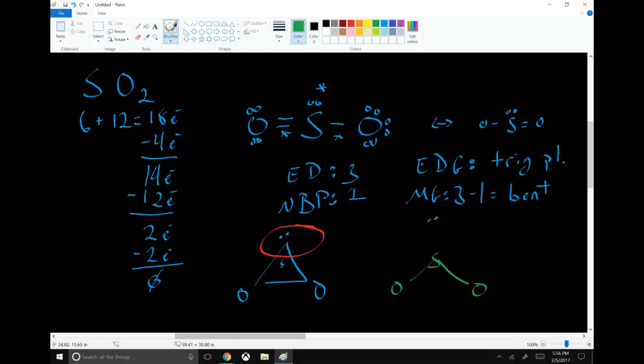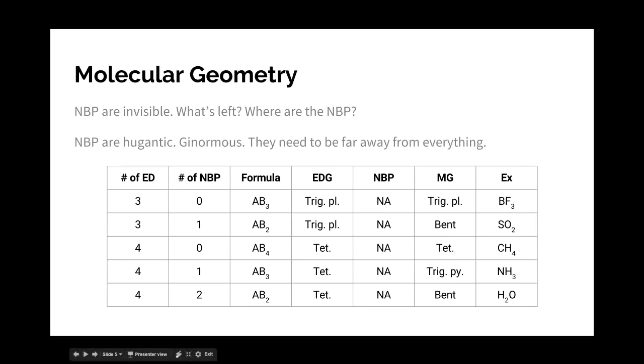Now I said earlier, non-bonding pairs take up more space. So these two oxygens have been squished together. The non-bonding pair has squeezed them in, pushed them together. So this bond angle, oxygen-sulfur-oxygen bond angle, is less than 120 degrees. Not a whole lot less. It's probably going to be something like 118 degrees. So it's close to 120 degrees. But it's still fairly significant. Because that means that this bond here is 121, and this bond here is 121. The non-bonding pair has gotten a lot more space at the expense of those two oxygens.